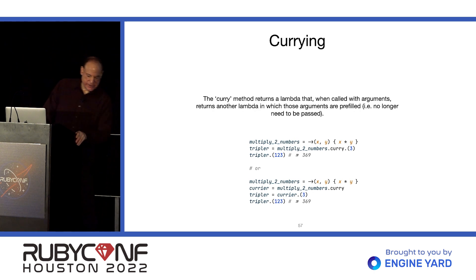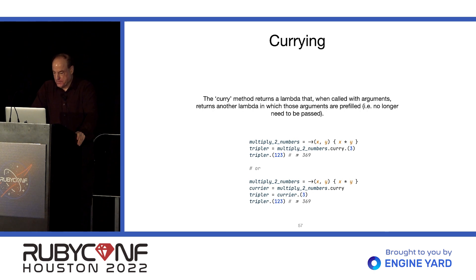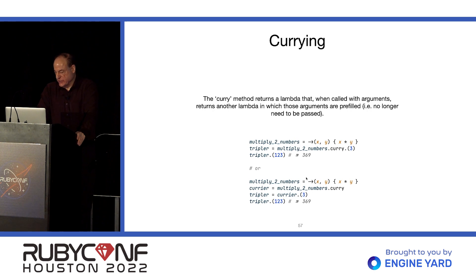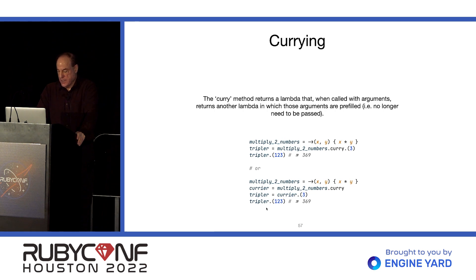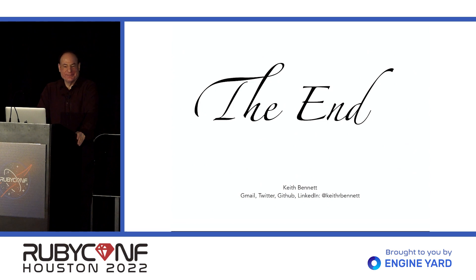Currying is the other way to do that. Let's say you have a lambda that takes two numbers — you can pre-fill a three in there by calling .curry and passing three, and then you get a tripler. Alternatively, you could get the return value from curry and put it in a variable called currier — this might be simpler to understand — and then just pass three to that currier to get the tripler. And we're done. Thank you for listening.